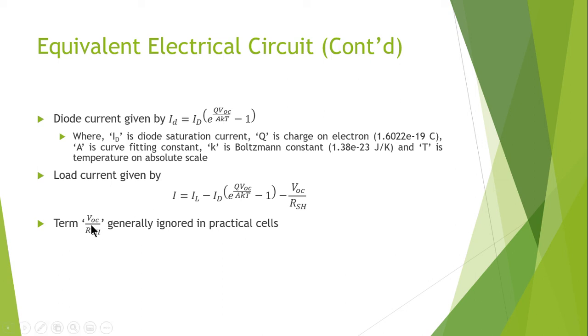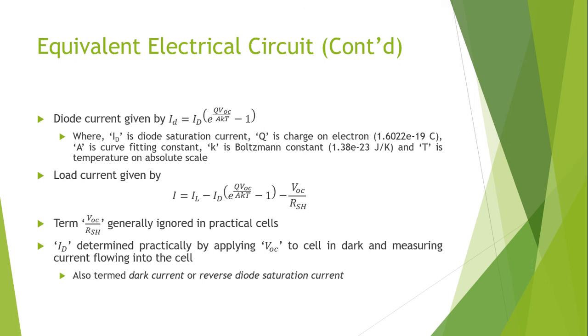The term VOC divided by RSH is usually ignored in practical cells because of its negligible value. ID is determined practically by applying the VOC, which is the open circuit voltage, to the cell in dark, meaning no light photons will be hitting the solar panel surface, and measuring the current flow into the cell. It is also termed as dark current or the reverse diode saturation current.